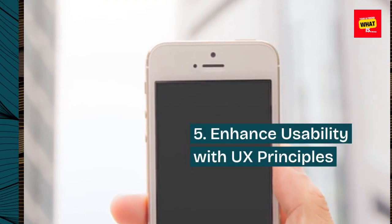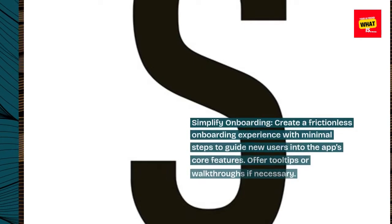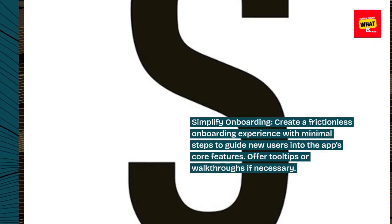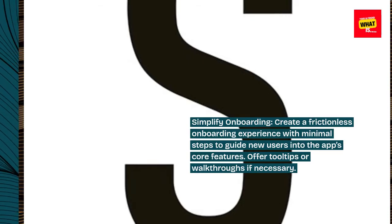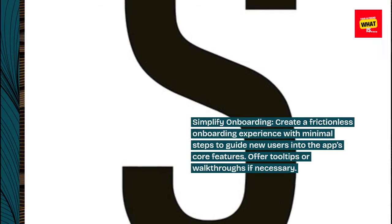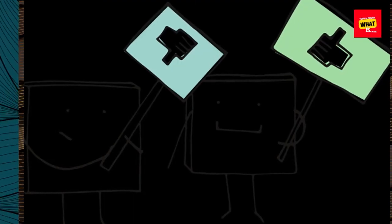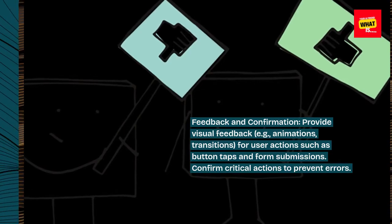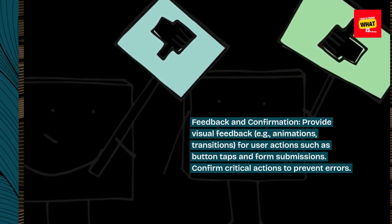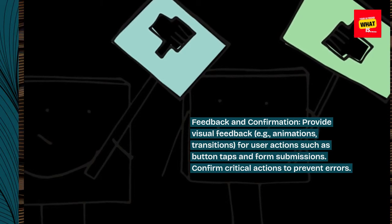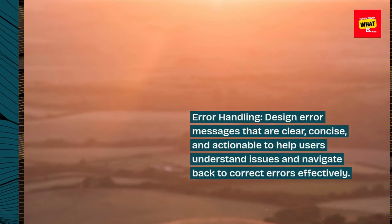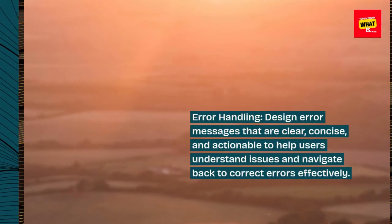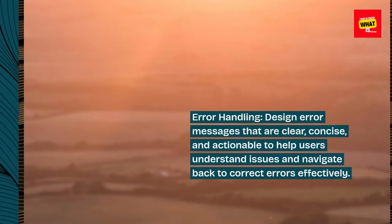Step 5: Enhance usability with UX principles. Create a frictionless onboarding experience with minimal steps to guide new users into the app's core features; offer tooltips or walkthroughs if necessary. Provide visual feedback, e.g. animations and transitions, for user actions such as button taps and form submissions, and confirm critical actions to prevent errors. Design error messages that are clear, concise, and actionable to help users understand issues and navigate back to correct errors effectively.